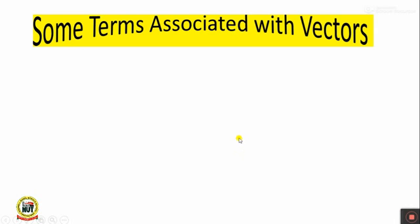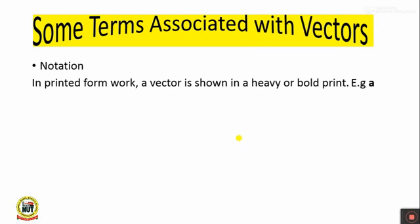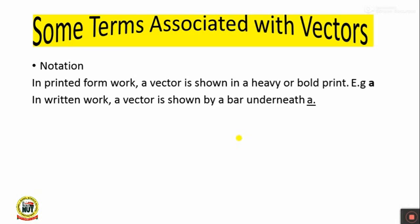There are certain terms associated with vectors. The first one is notation — the way in which vectors are presented. In printed work, bolding a vector is enough to show that this is a vector. But when you are writing, all you need to do is underline it. For example, vector A is printed in bolded form, whereas vector A is underlined when handwritten.